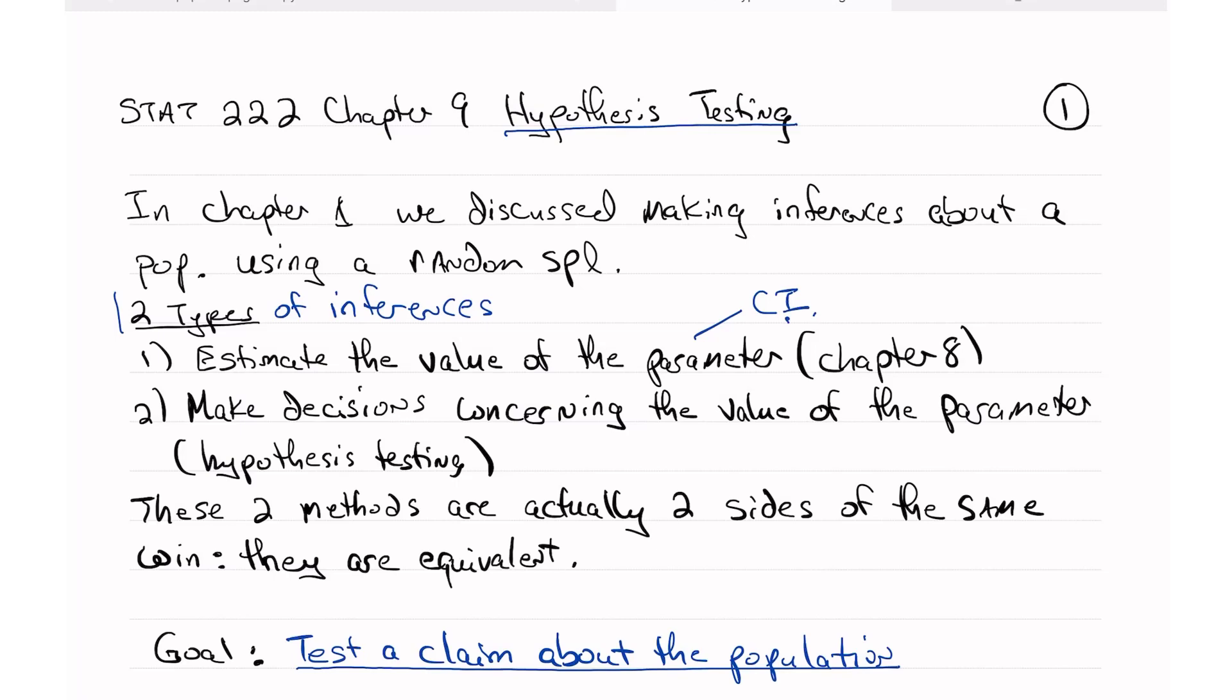Number 2 is what we're going to do in this chapter, chapter 9, and that is we're going to make decisions concerning the value of a parameter, and that is going to be hypothesis testing. Now, I know that this is not exactly clear yet, but first I want to mention that these two methods are actually equivalent. They are like two sides of the same coin.